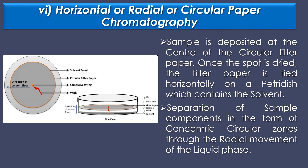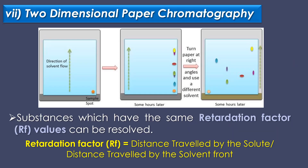The sixth type is horizontal or radial or circular paper chromatography, where the sample is deposited at the center of a circular filter paper. Once the spot is dried, the filter paper is placed horizontally on a petri dish containing the solvent, allowing separation in the form of concentric circular zones through radial movement of the liquid phases. The seventh type is two-dimensional paper chromatography, used to resolve substances that have the same retardation factor or RF value. RF is calculated as distance travelled by the solute divided by distance travelled by the solvent front.